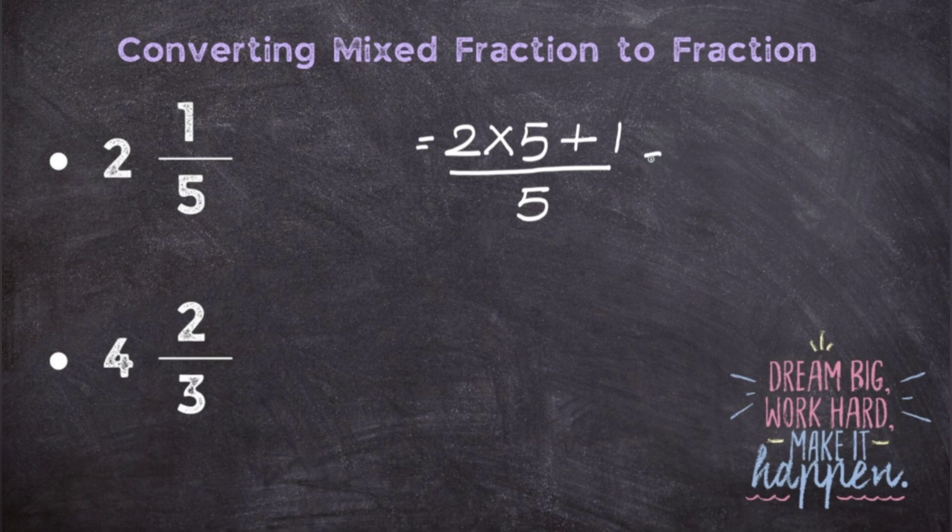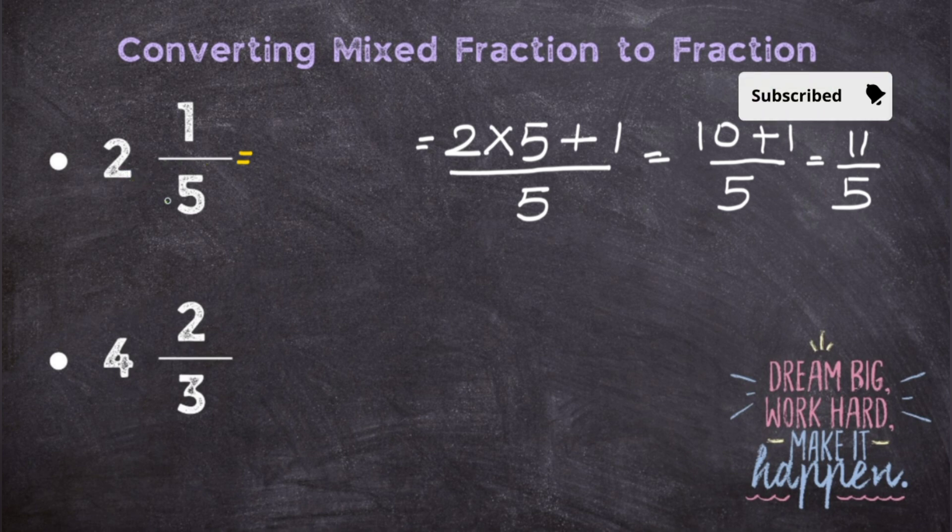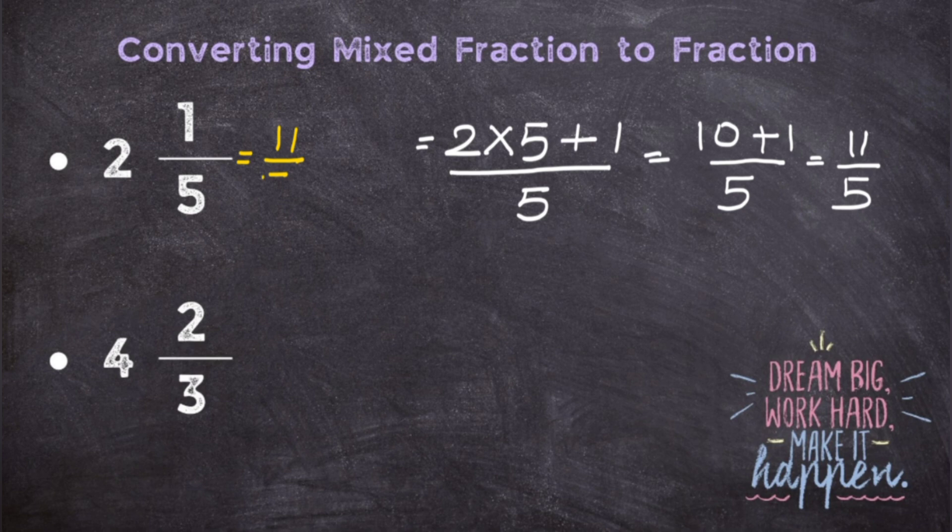So 2 times 5 is 10 plus 1 upon 5 gives you 11 upon 5. So your answer, that is the fraction for the given mixed fraction 2 and 1 upon 5, will be 11 upon 5.